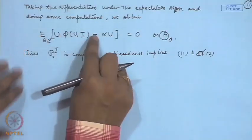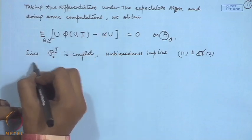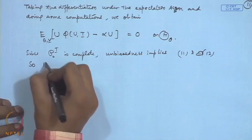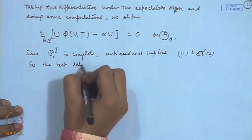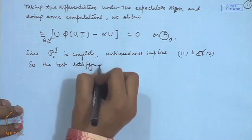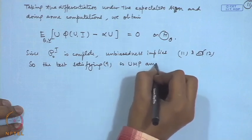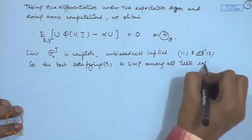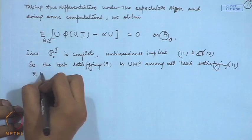These 2 conditions will follow because I can write expectation of expectation here. So, the test satisfying 9 is UMP among all tests satisfying 11 and 12.